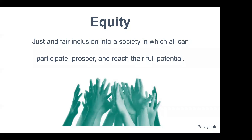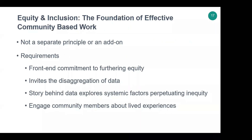This is the definition from PolicyLink, an organization in Oakland that I think is really wonderful. It talks about the just and fair inclusion into a society in which we can all participate, prosper, and reach our full potential. As we begin to add equity into our work, it's not a separate principle or add-on we do occasionally. We need to make a front-end commitment to furthering equity, invite disaggregation of data, and always look at the true story. The story behind the data explores the systemic factors perpetuating inequity, and we must engage community members to truly understand lived experiences.